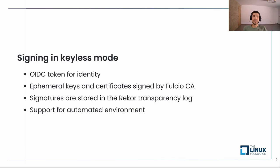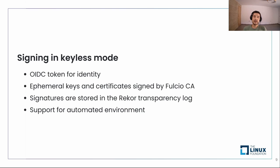Let's put everything together and see how we can sign using the keyless mode. Keyless uses OIDC for identity — we don't need a key, we just need authentication from an OIDC provider. That's all we need to prove our identity. Then we will use the short-lived certificate issued by Fulcio for the actual signing, and we will push these certificates alongside the signature to the Rekor transparency log. That's how we verify — we verify against the Rekor transparency log with the timestamp, and then we can know if we can trust a signature or not.